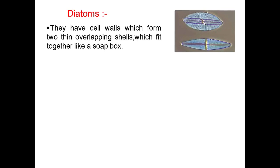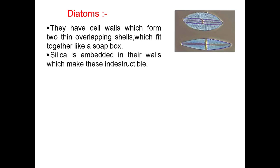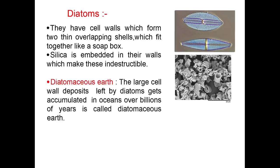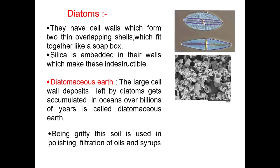Diatoms are the chief producers in the oceans and prepare food from water and sunlight by the process of photosynthesis. Diatoms have cell walls which form two thin overlapping shells that fit together like a soap box. Silica is embedded in their walls, which makes them indestructible.